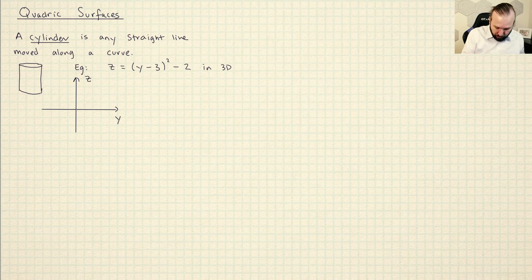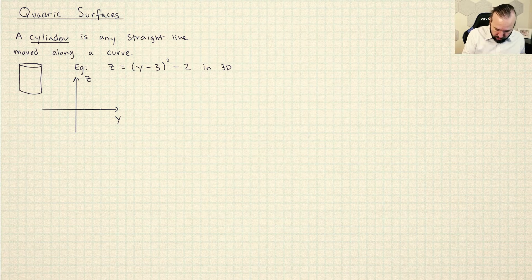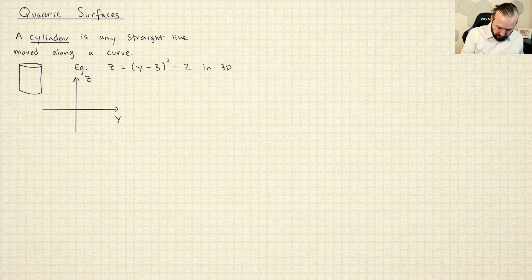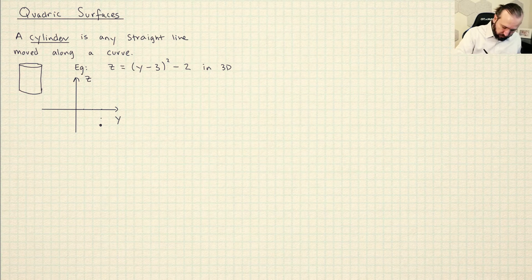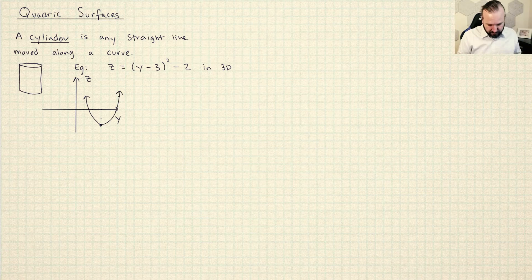Okay, so I'm going to draw a parabola here and it's been shifted one, two, three spaces to the right and then down two. So I get a parabola like this. That's nice.